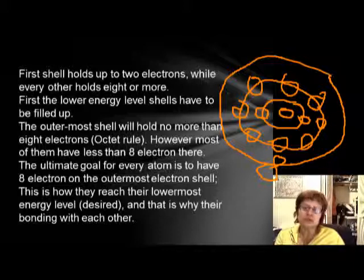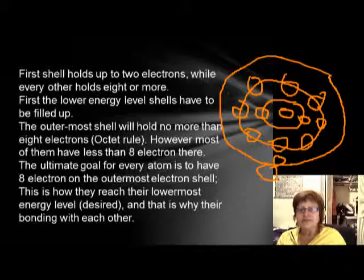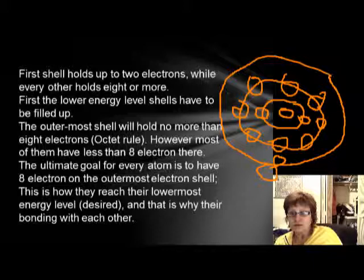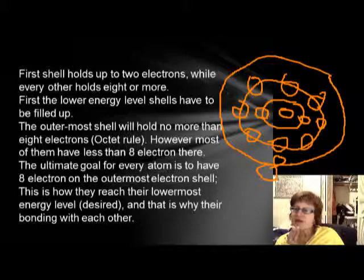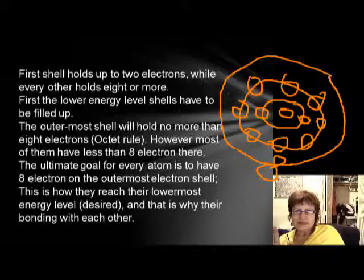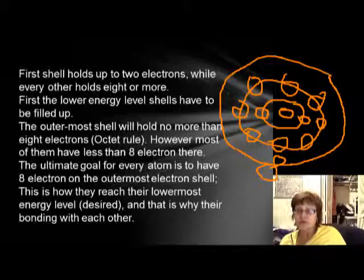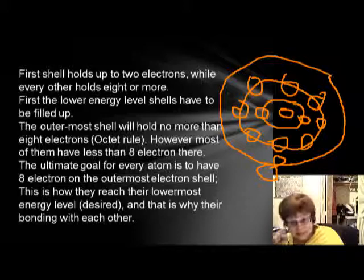We call the outermost shell the valence electron shell. The most stable state of an atom is when it has eight electrons there. Naturally they don't, so elements combine with each other to achieve eight electrons on the valence shell. This is called the octet rule: elements need eight electrons on the outermost shell to reach their lowest energy level, and they'll do everything to get there.